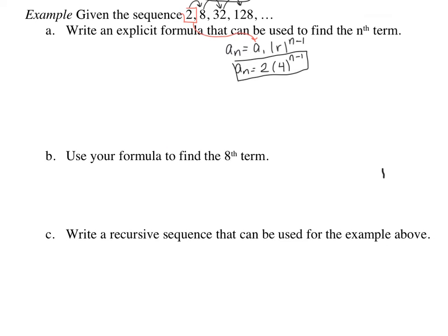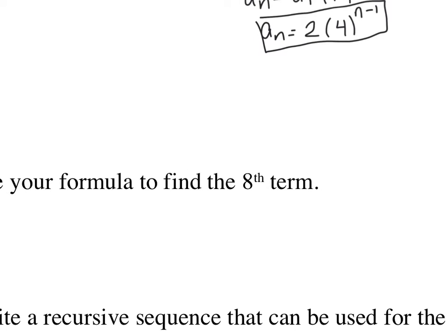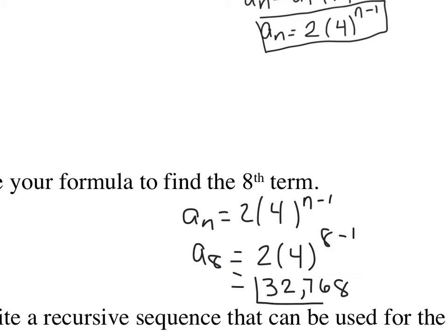We're now going to use our formula to find the eighth term. So all we do for this part is we simply rewrite our formula, which we said before was a sub n equals 2 times 4 to the n minus 1. What I want to do though is I want to find a sub 8, which is going to be 2 times 4 to the 8 minus 1. This is all calculator work. Like I said before, you heard me take out my TI-84+. We type into our calculator 2, parenthesis 4, parenthesis, caret, 8 minus 1. I hit enter. My answer was 32,768. And that is my eighth term.